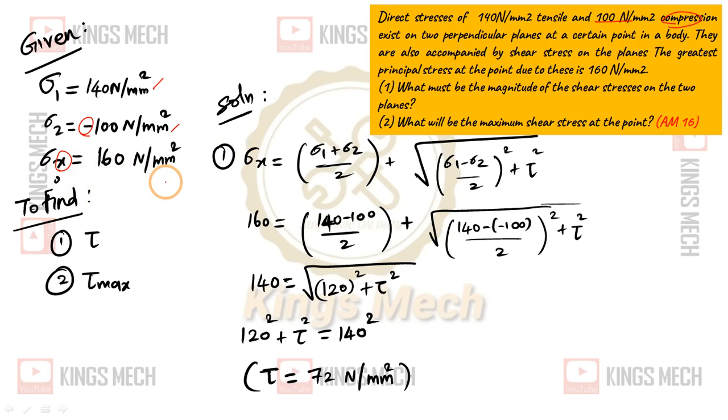Using the formula: 160 equals sigma 1 plus sigma 2 divided by 2, plus or minus square root of sigma 1 minus sigma 2 divided by 2 whole square, plus tau square. We get 160 equals 140 minus 100 divided by 2, plus square root of 140 minus minus 100 divided by 2 whole square plus tau square.